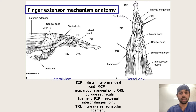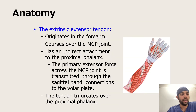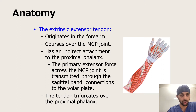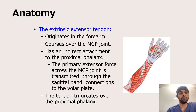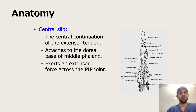This is a very important slide which gives you a clear picture of how the extensor mechanism or the extensor anatomy works. Because if you understand this picture and understand the tendons in it, then probably you'll be able to understand how the deformities are being formed. So we start with the extrinsic extensor tendon. It originates in the forearm, courses over the metacarpophalangeal joint. When they pass through the proximal phalanx, they have an indirect attachment in the form of sagittal bands, which come from the volar plate. So they are the primary extensor force across the MCP joint. And then the tendon trifurcates over the proximal phalanx.